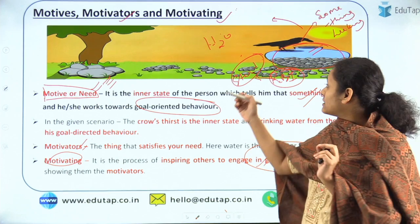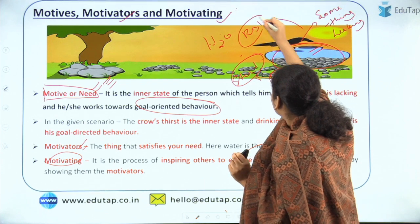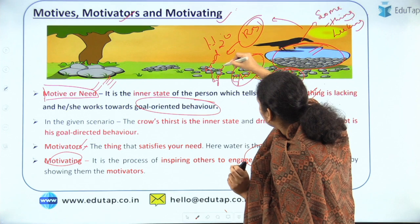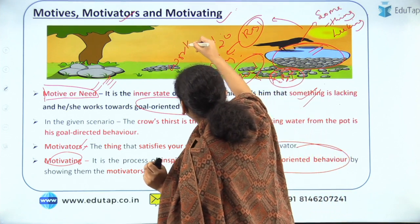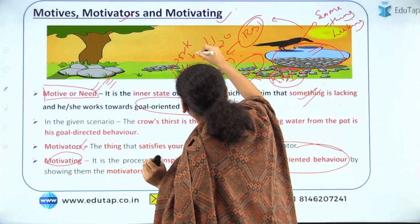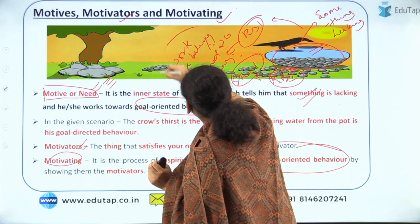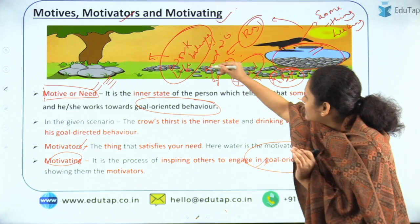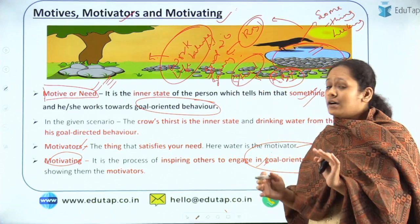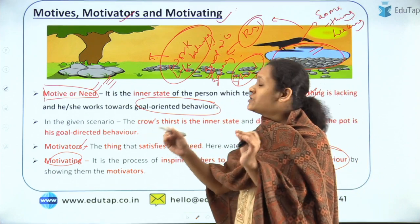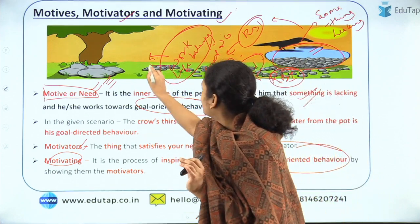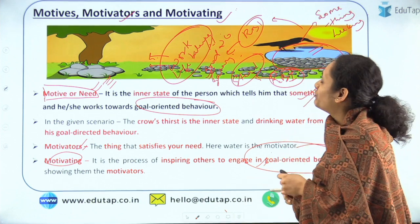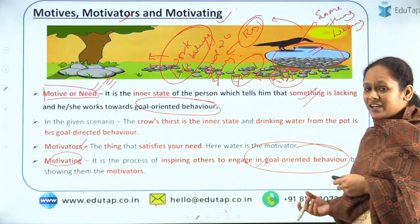How would you inspire them? You will tell them: if you join RBI, you get a good salary and there is a work-life balance. All these things are motivators. So as a motivating person, you show your colleagues or friends the motivators and motivate them towards goal-oriented behavior. I hope you understood what motives, motivators, and motivating are.